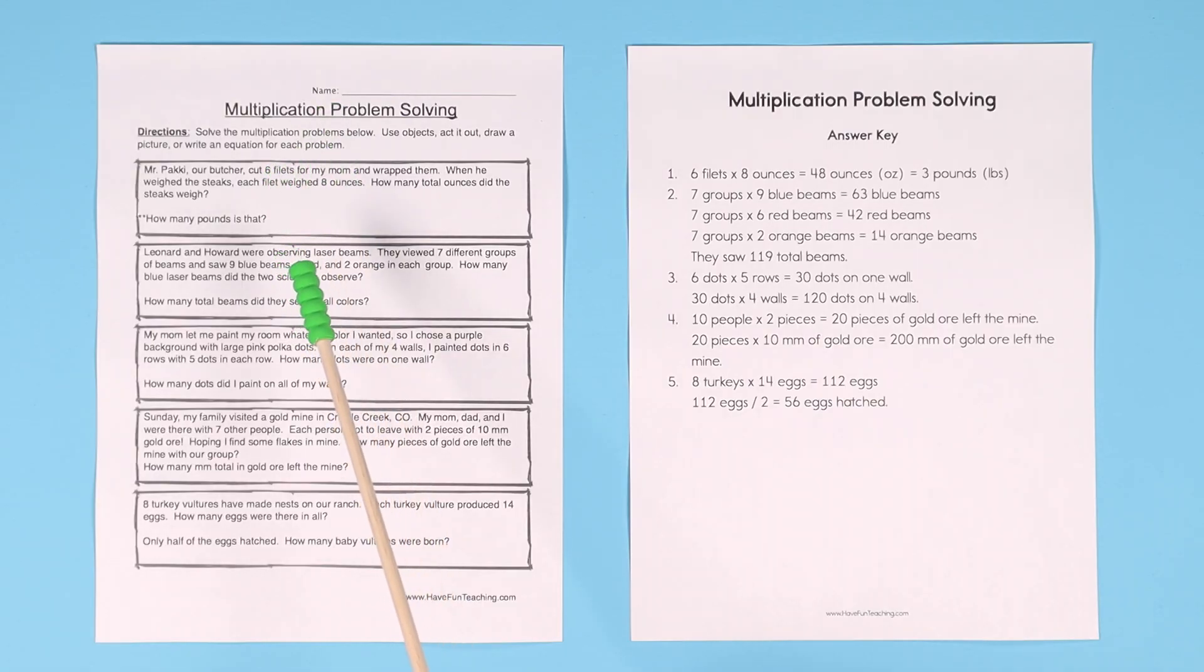But then they have a second question where they have to convert it to pounds. How many pounds is that? There are 16 ounces in a pound, so that would be three pounds.